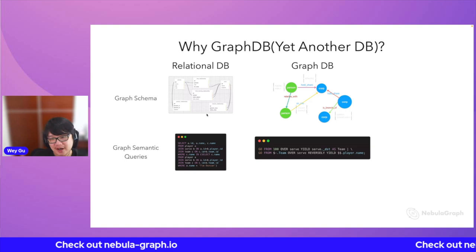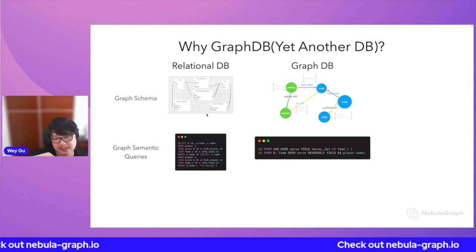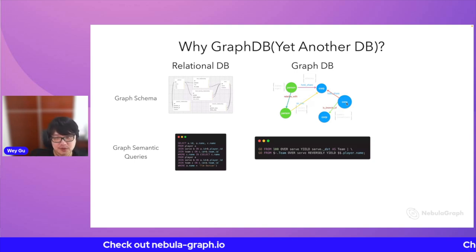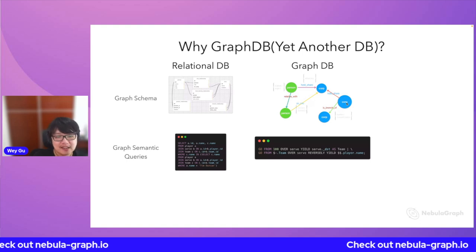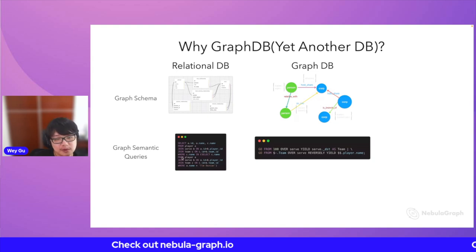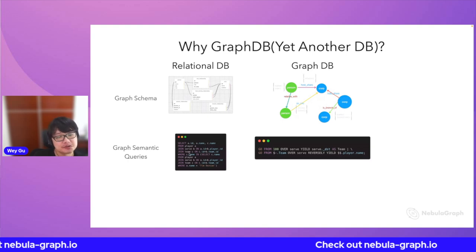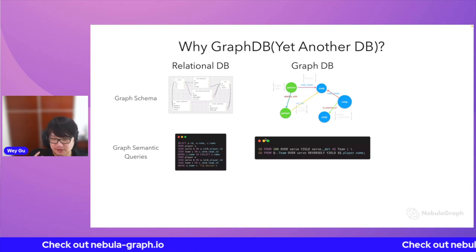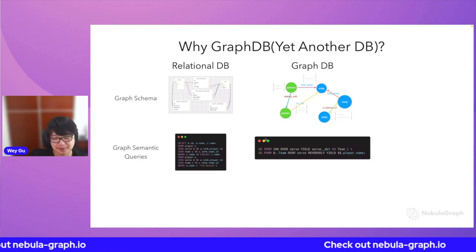Another thing that's not straightforward with tabular databases is the query itself. When you want to do graph queries — jumping from one node to another and to another — those kinds of multi-hop queries can be expressed with SELECT JOIN, but it's quite painful. This is just a one-hop jump. But when we do this in the graph database, it can be extremely easy because it's built for that.